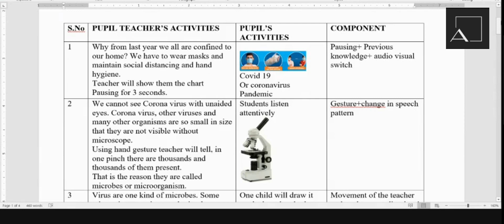So definitely they will tell me it is because of COVID-19 or coronavirus pandemic. Then I'll say we cannot see coronavirus with unaided eyes. Coronavirus, other viruses, and many other organisms are so small in size that they are not visible without microscope. Using my hand gesture, the teacher will tell that in one pinch there are thousands and thousands of them present.